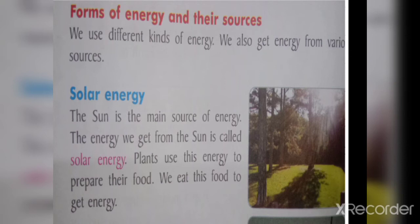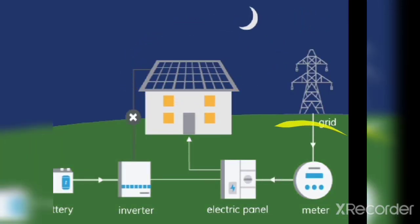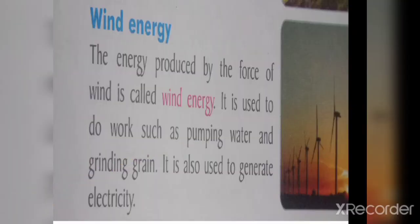Animals take food that is made by plants, and plants use solar energy. Solar panels can be used to save solar energy and produce electricity. The next form is wind energy — the energy produced by the force of wind.